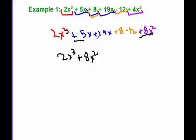Positive 5x plus 19x, 19 plus 5 is plus 24x. And then positive 8 minus 12. So that's 8 minus 12 gives me negative 4. So this becomes minus 4.